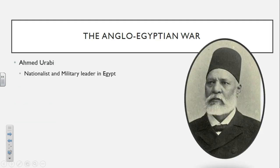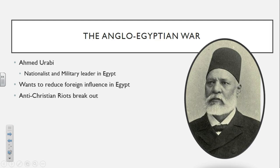Next, the Anglo-Egyptian War. Ahmed Urabi is a nationalist and military leader in Egypt who wants to reduce foreign influence in Egypt. At this time period, Africa is being controlled primarily by Europeans. Ahmed Urabi does not like this and wants to reduce the influence of foreigners in Egypt. He does not view foreigners as beneficial. Additionally, there are going to be a number of anti-Christian riots breaking out, as the Egyptians do not want Christians telling them how to live their lives — they want to be independent.